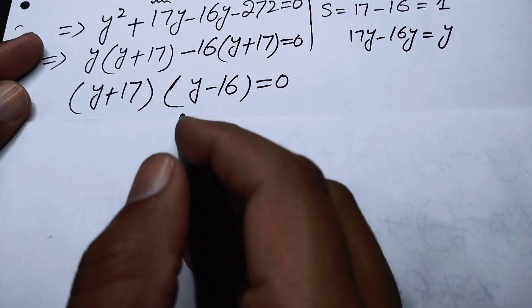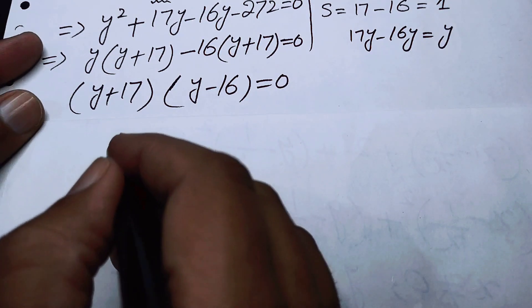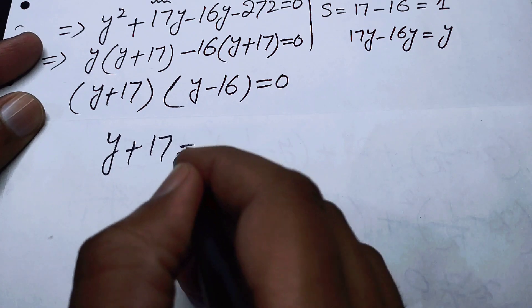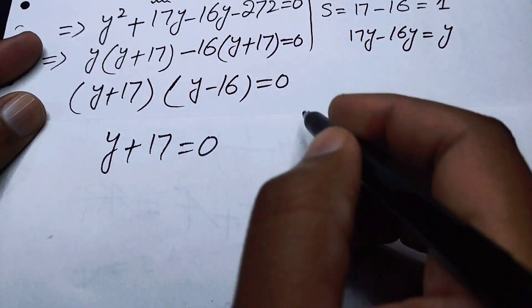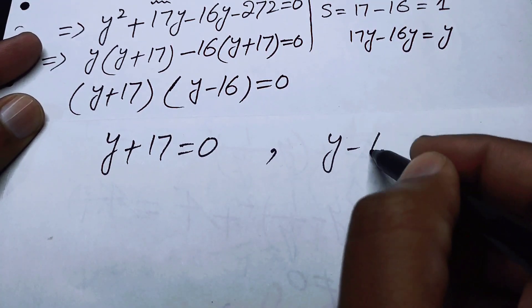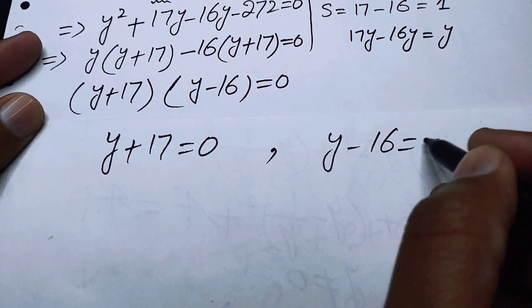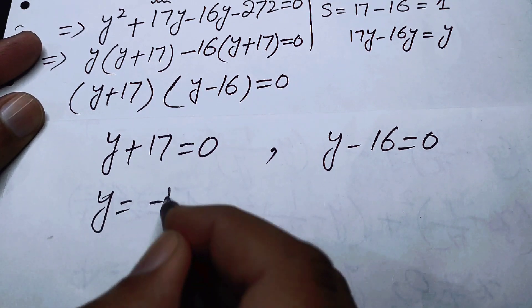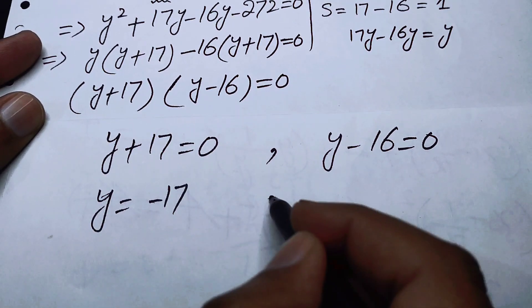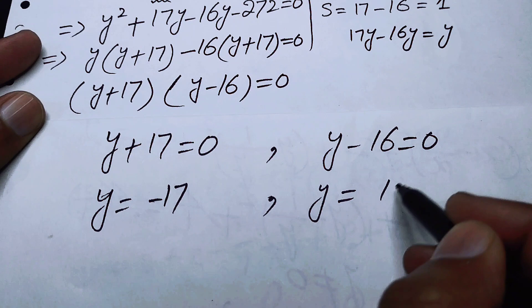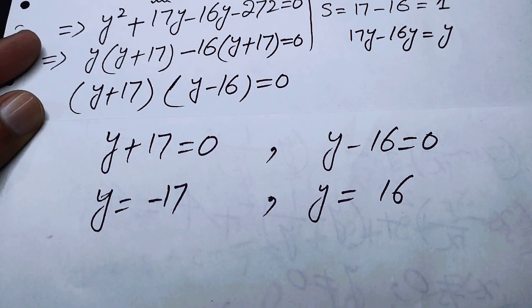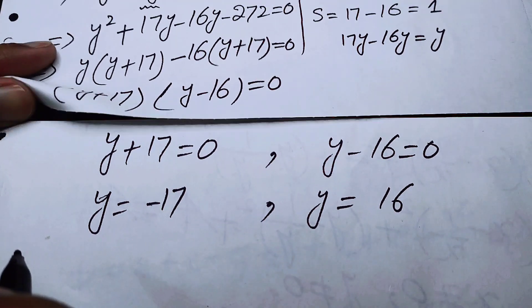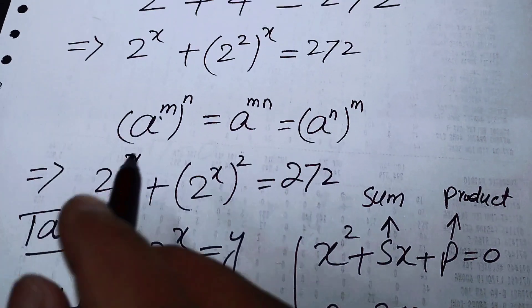Setting each factor equal to zero: y plus 17 equals 0 gives y equals minus 17, and y minus 16 equals 0 gives y equals 16. Now we substitute back, replacing y with 2 to the power of x.